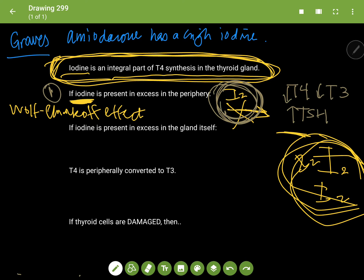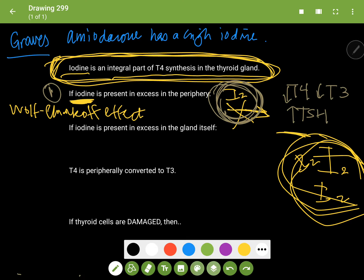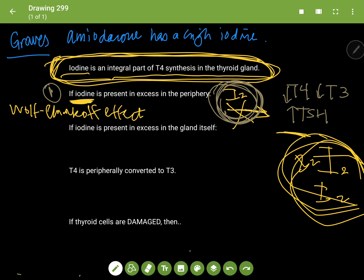Now if amiodarone starts to become toxic to the thyroid gland, it starts to accumulate in the thyroid gland itself. So now in the gland itself, you have the high iodine content drug.